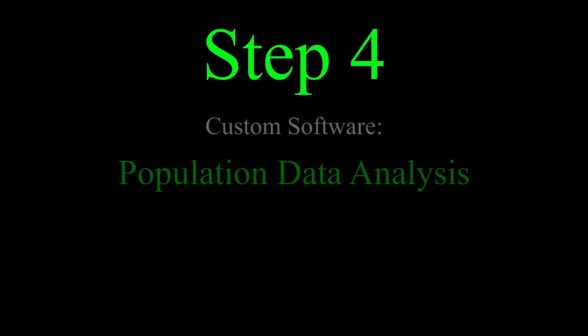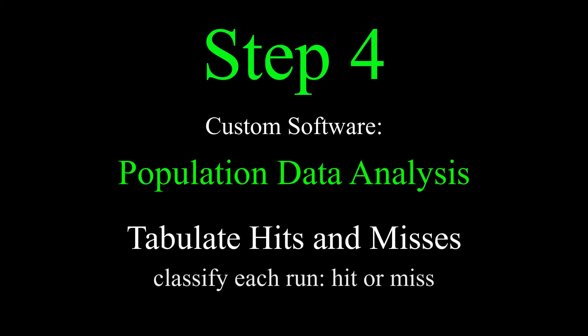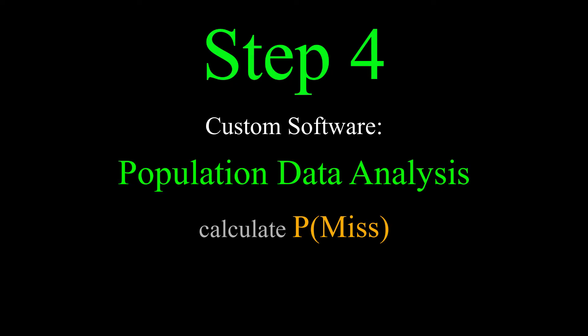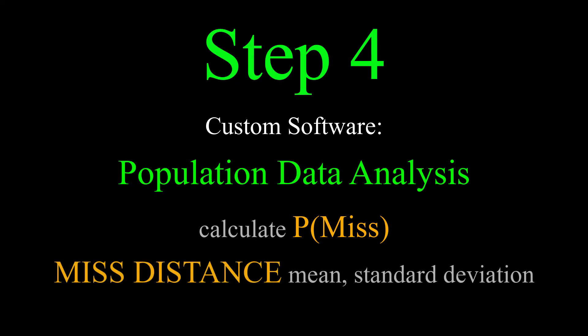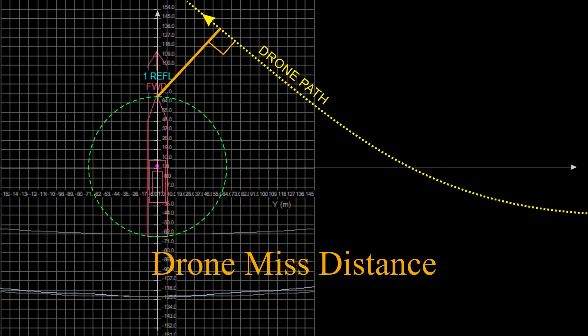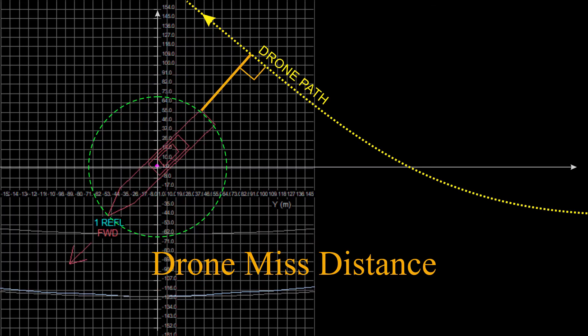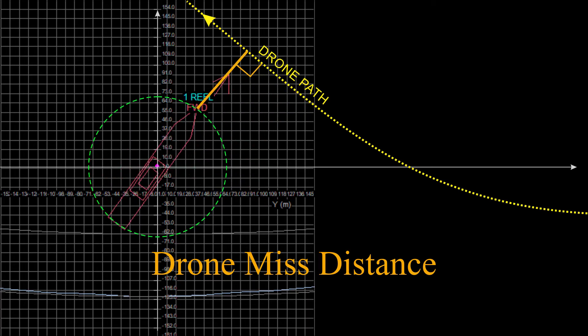Step four, use a custom software application to tabulate hits and misses. Can't do it by hand. There's too many thousands of runs. Calculate the probability of a miss and the mean and standard deviation of the miss distance relative to the bow and stern of the ship for several different ship headings. The variation of ship heading is important because the probability of a miss is based on the projected width of the ship. End on aspect is harder to hit for a drone than a broadside aspect.